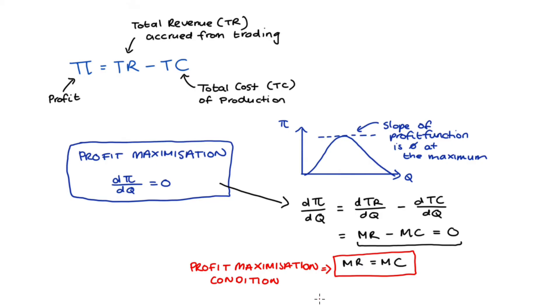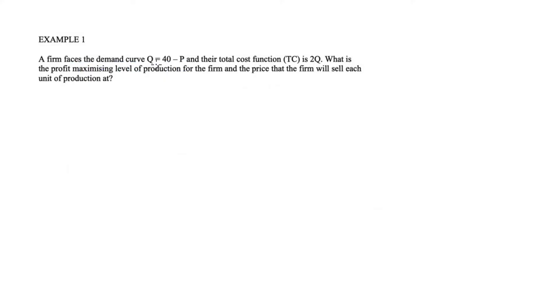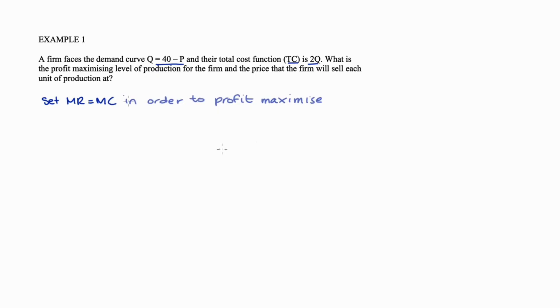Let's do a couple of examples with this condition. In the first example, a firm faces the demand curve Q = 40 minus P, and their total cost function is 2Q. We are asked to find the profit maximizing level of production for the firm and the associated price. We know we need to set marginal revenue equal to marginal cost to find our profit maximizing quantity.